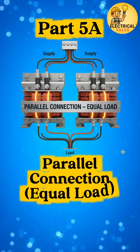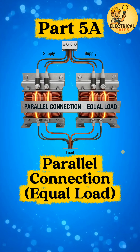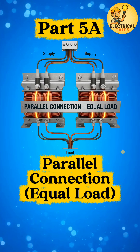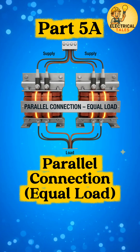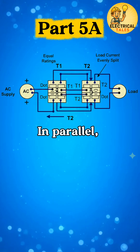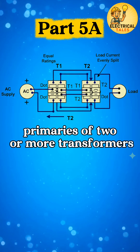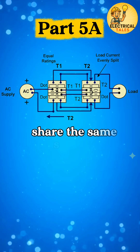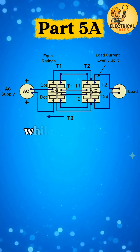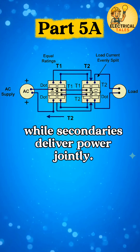After series connection, let's see how transformers share power together in the parallel connection. In parallel, primaries of two or more transformers share the same supply, while secondaries deliver power jointly.